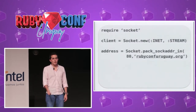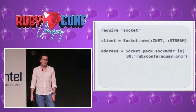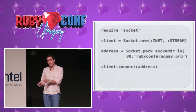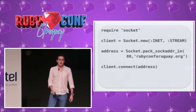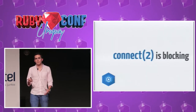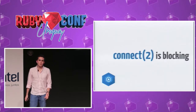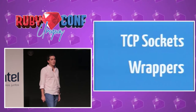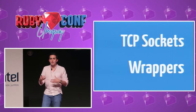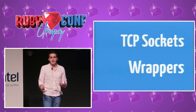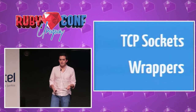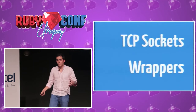Now let's see what happens with the client. The client starts with the same steps — it creates a socket and an address. Then we call the connect() method, which is a binding to the operating system connect(). We give it the address, and it's important to know that connect() blocks. Then we can close the connection.